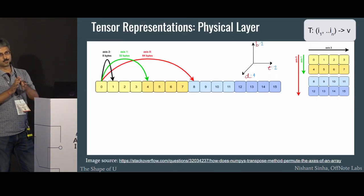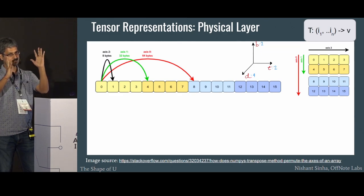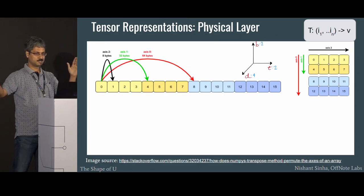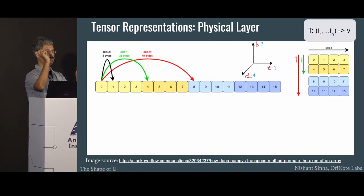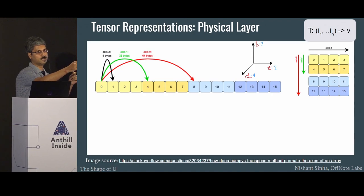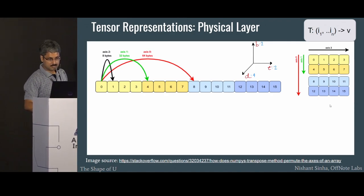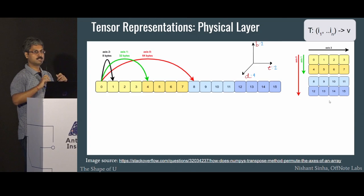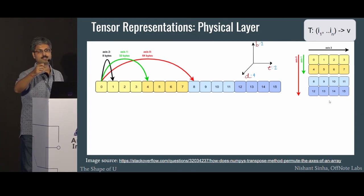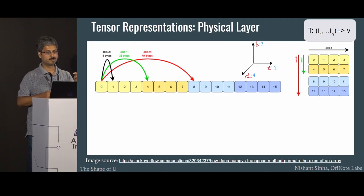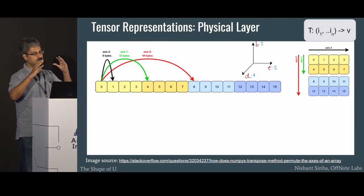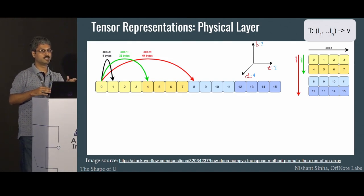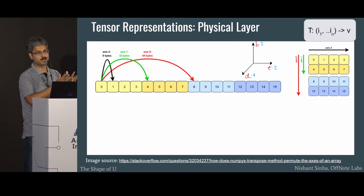Let's start with the gory details. The cube you see in pictures — the set of matrices — is not how a tensor is represented in memory. It's actually a flat list. When you request a value for a dimension, there is metadata — shown as red and green arrows — which tells you how far you have to jump into the list to get a particular element. For the first axis, you jump eight elements; for the second axis, you jump four elements. You have to work in this flat world to understand the nitty-gritties of how tensors are represented in memory.